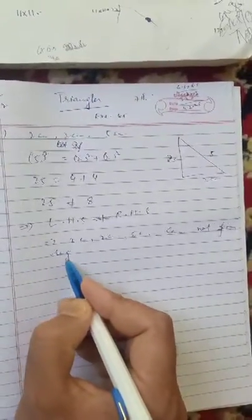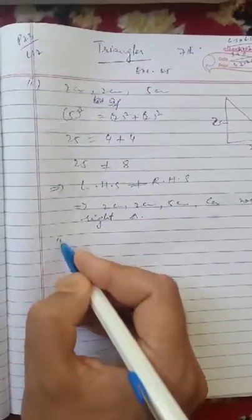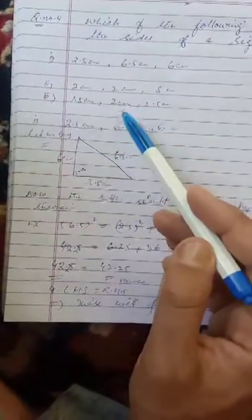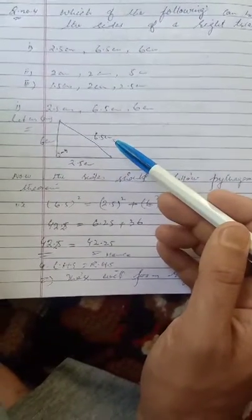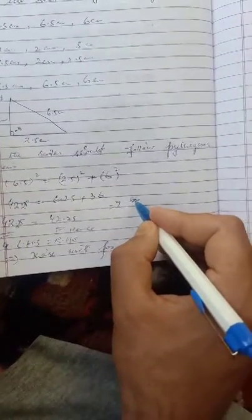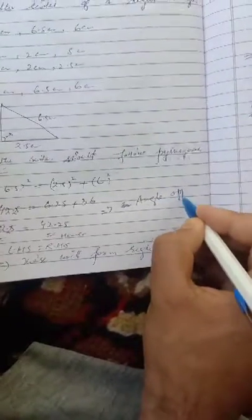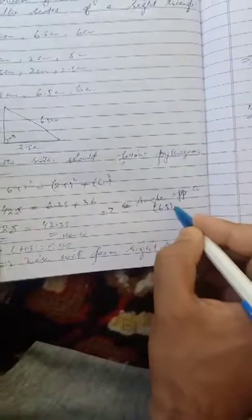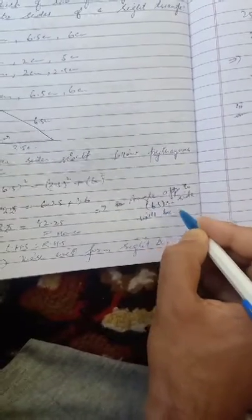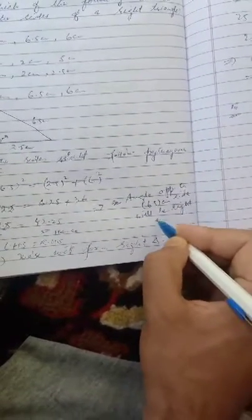These are the three parts. If we take a right angle triangle, the angle opposite to 6.5 centimeter side will be a right angle.